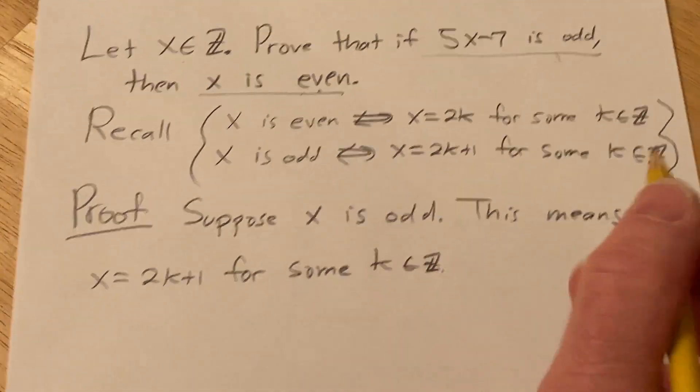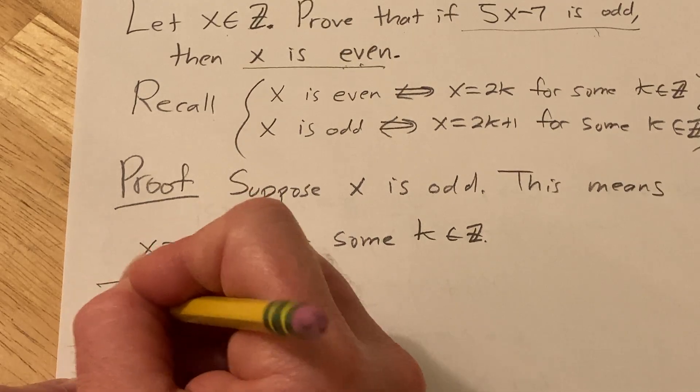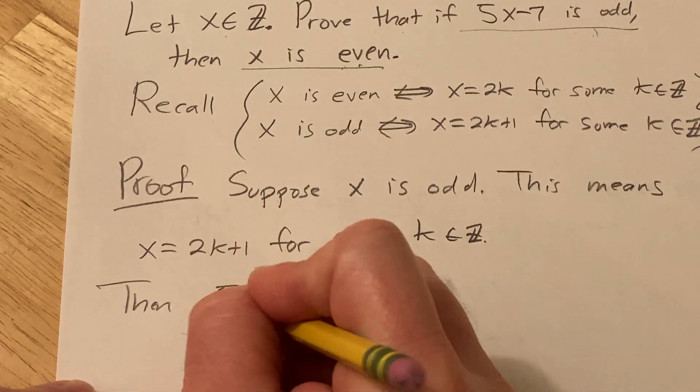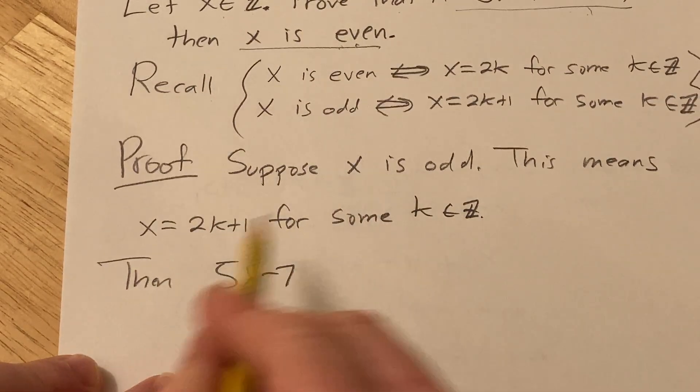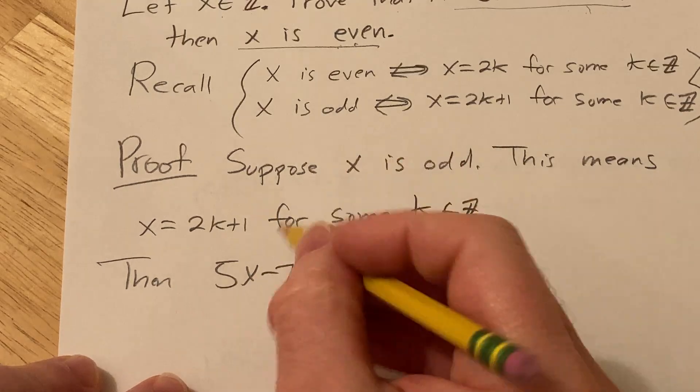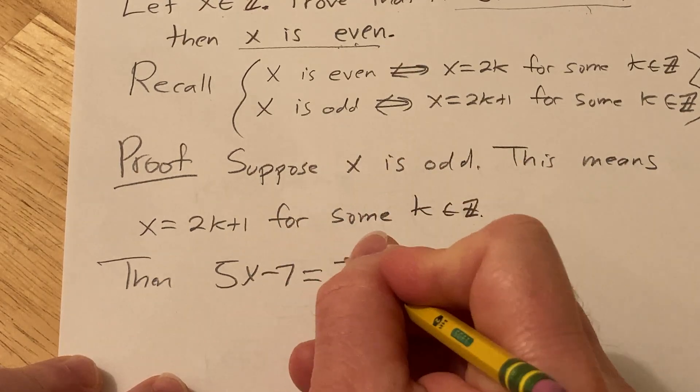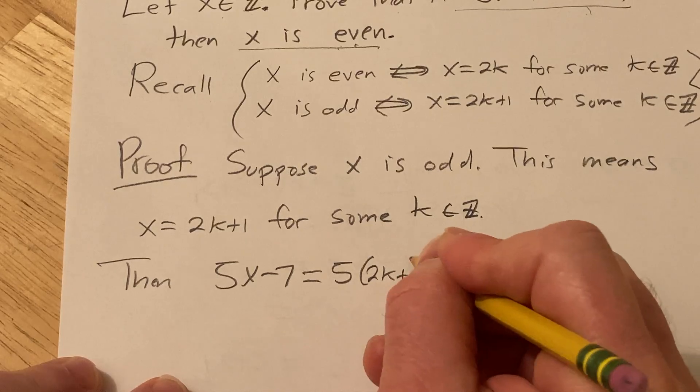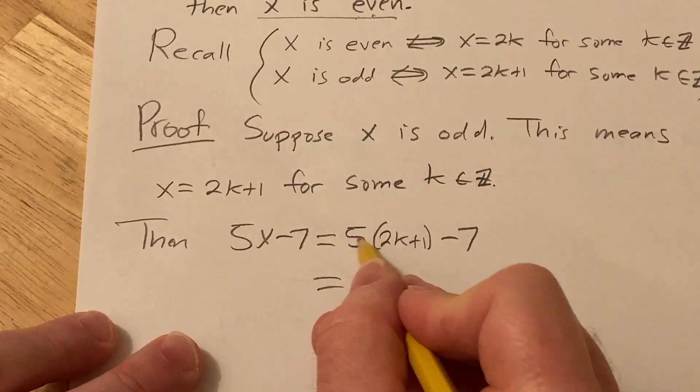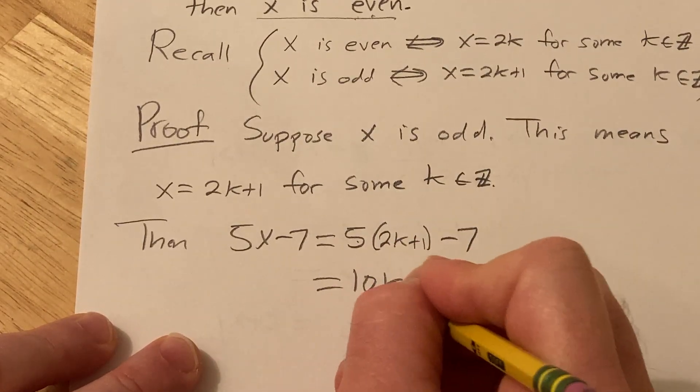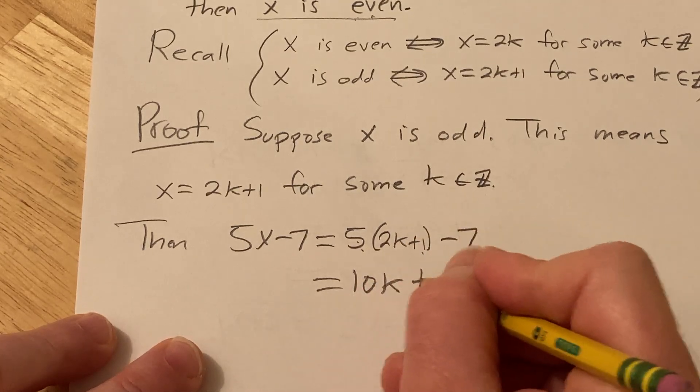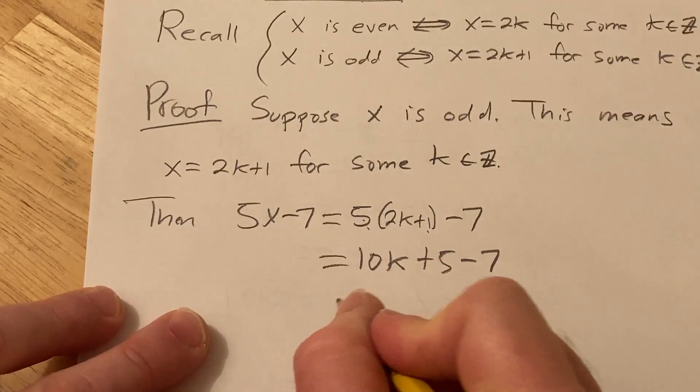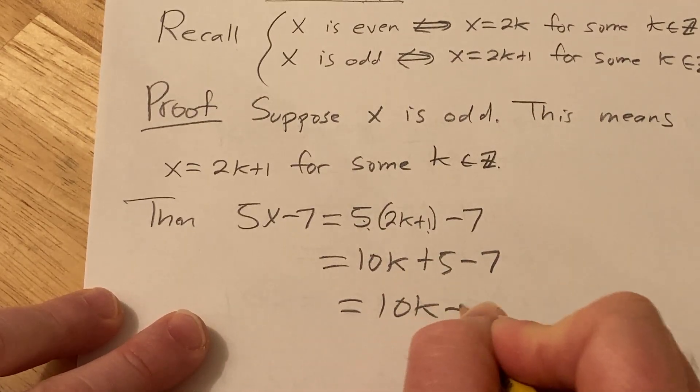Now we have to show 5x minus 7 is even. So we just look at it. And we basically make a substitution with what we have. And let's see if it works. So this is 5x is 2k plus 1. I have not done this problem yet. Okay, 5 times 2k is 10k. 5 times 1 is 5 minus 7 is 10k minus 2.